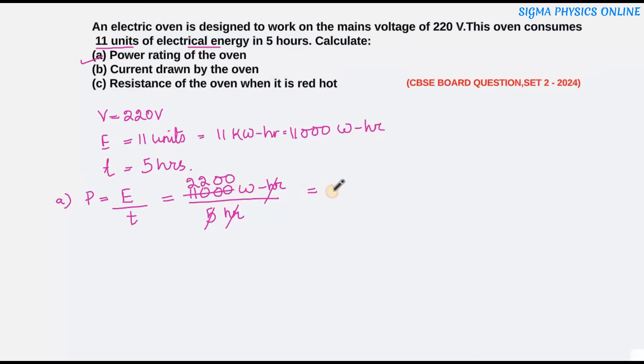Hour cancels, 5 into 2200. The power rating of the oven is 2200 watt.